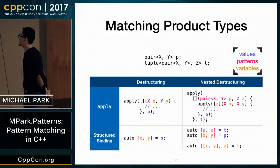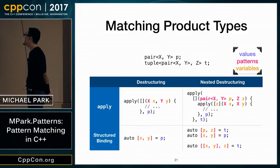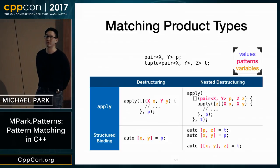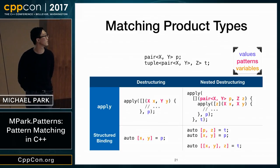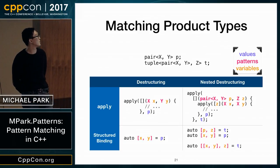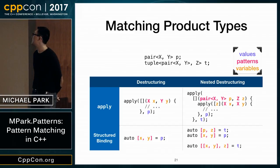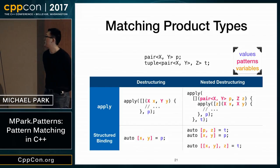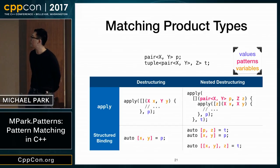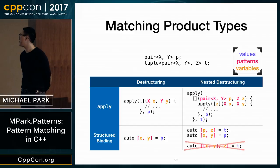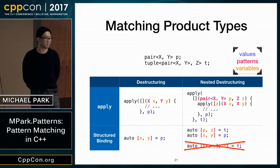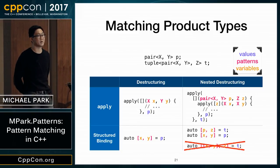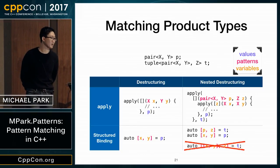C++17 also introduced structured bindings. We can now say auto [x, y] = p and expand p into variables x and y. However, nested destructuring like auto [[x, y], z] = t is not supported, so we still have multiple levels of nesting when trying to decompose complex data types.